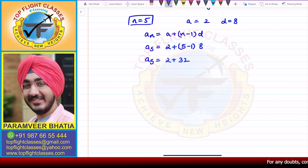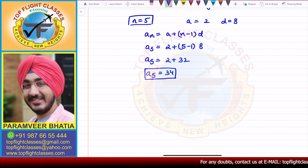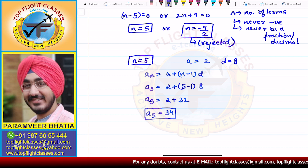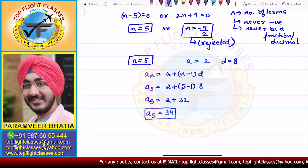So A5 comes out to be 34. In this case, we found N = 5 and AN = A5 = 34.